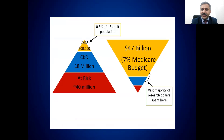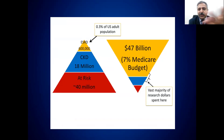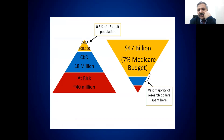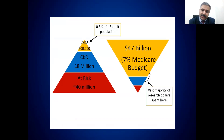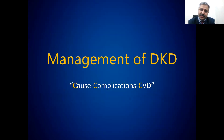It's a real burden. America is spending almost 47 billion dollars — 7% of their Medicare budget — on CKD. We don't have that. So we need to focus on early detection, prevention, and early treatment so that we can delay the onset and progression of kidney disease.